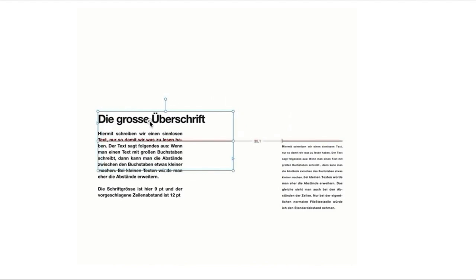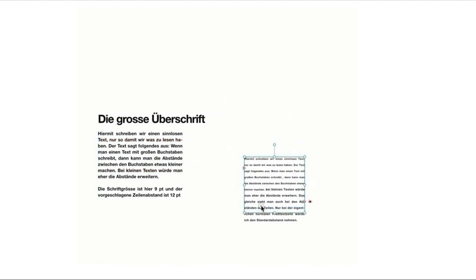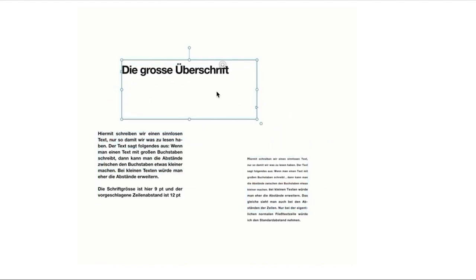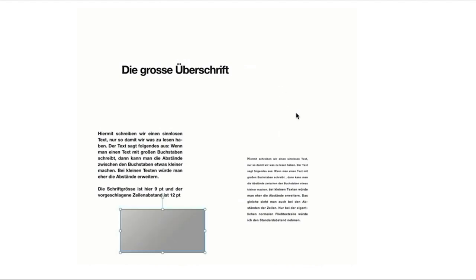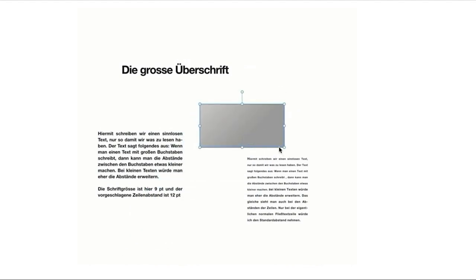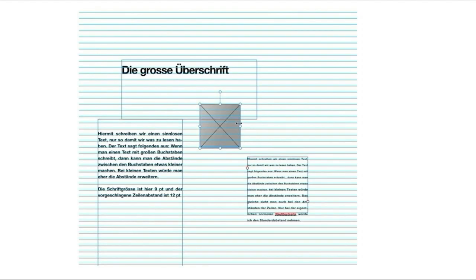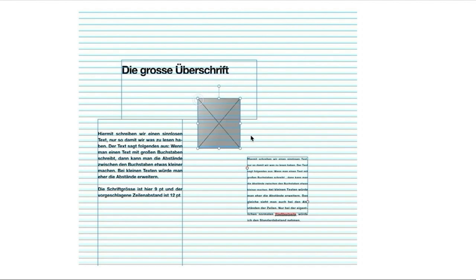Das Interessante ist, dass wenn man das visuelle Raster mal ausschaltet, man irgendwie spürt, dass die Dinge etwas miteinander zu tun haben. Egal wie man darin arbeitet, diese Sachen bilden zueinander eine Art von Harmonie. Und das Gleiche gilt auch für Grafiken, die man verwendet — hier repräsentiert durch ein graues Rechteck. Auf die Art und Weise kann man relativ schnell, horizontal betrachtet, eine Art von Gliederung und Logik einbringen.